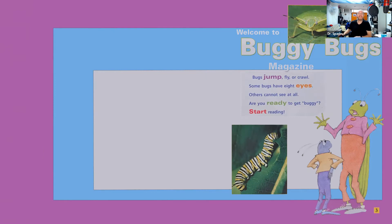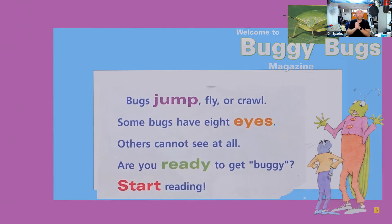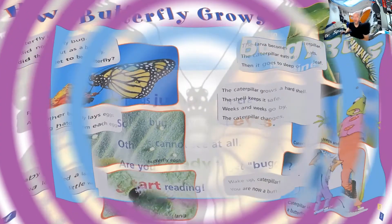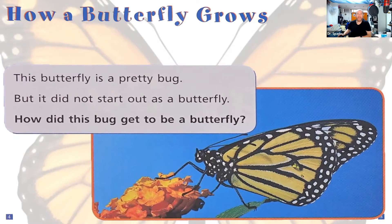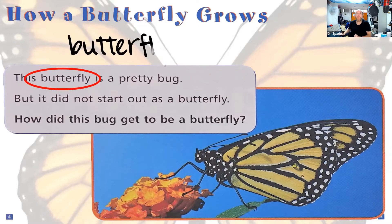Welcome to Buggy Bugs Magazine. We are going to read this all together. Open up your books and let's read together. Ready, go. Bugs jump, fly, or crawl. Some bugs have eight eyes. Others cannot see at all. We're going to find out how a butterfly grows. Let's go over these articles one at a time, starting with this one. Before we do it, let's check out our new words. Everybody, please circle in your book the word butterfly. Let's break this word up a little bit. Everybody sound it out with me. Say butterfly.